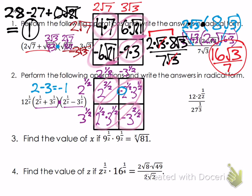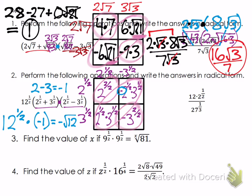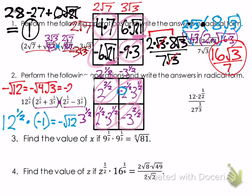The negative 1 is not the final answer — there is a 12^(1/2) in front multiplying it. Rewriting 12^(1/2) as the square root of 12 using power-over-root, then multiplying by negative 1 gives negative √12. Simplify: √12 = √4 times √3, and √4 = 2, so the final answer is negative 2√3.